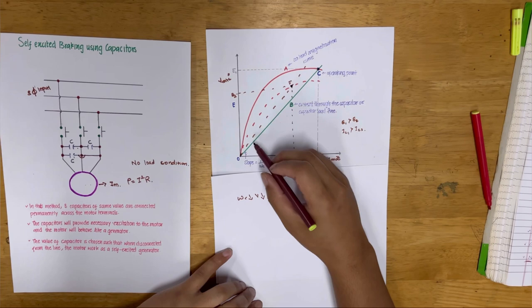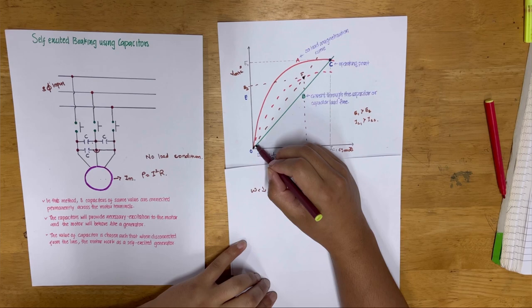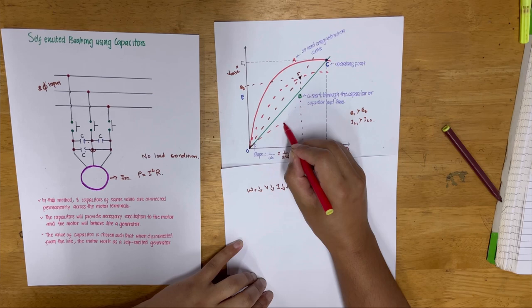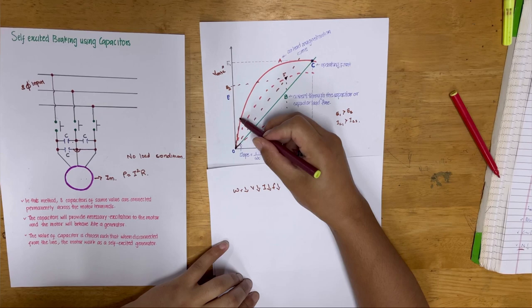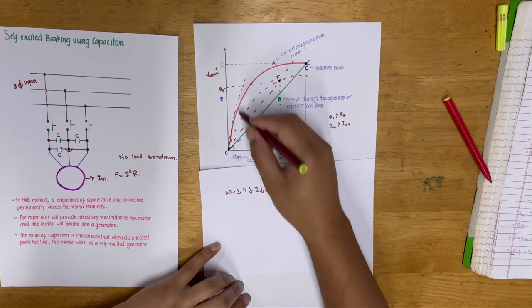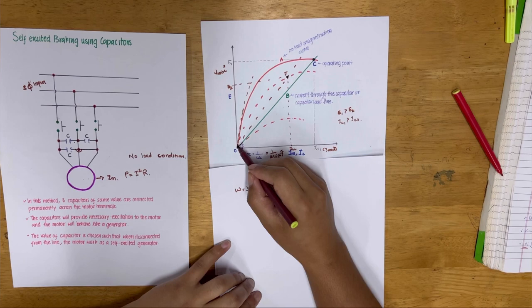As the speed continues to decrease, the magnetizing curve keeps decreasing. Below the critical speed, the magnetizing curve and the capacitor load line no longer intersect. When there is no intersection between the magnetizing curve and the capacitor load line, there is no self-excitation and the braking of the motor stops.